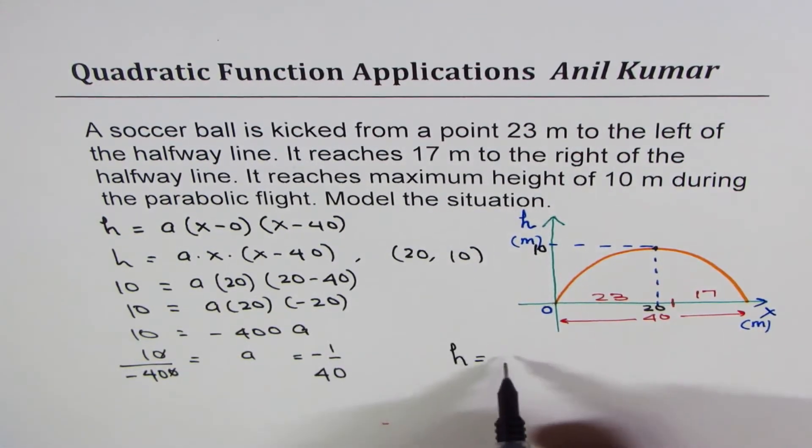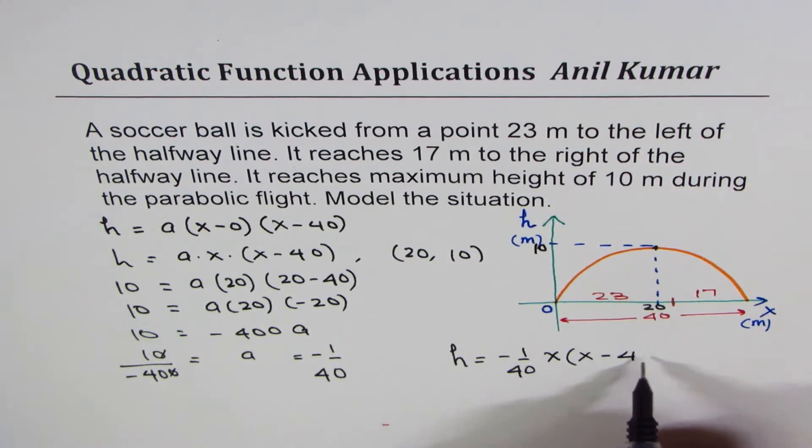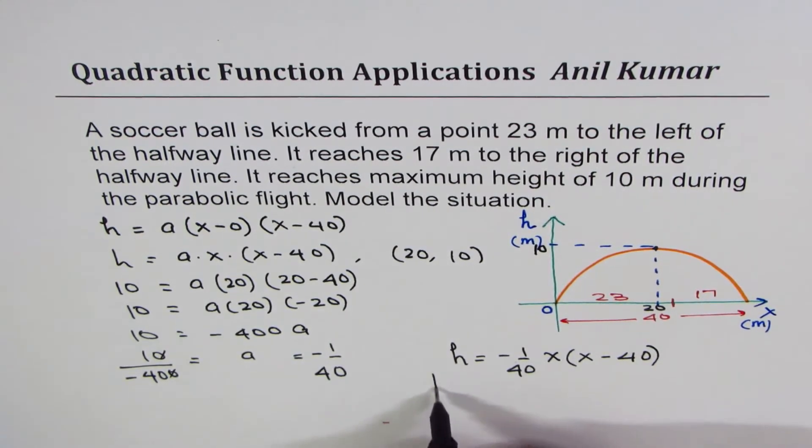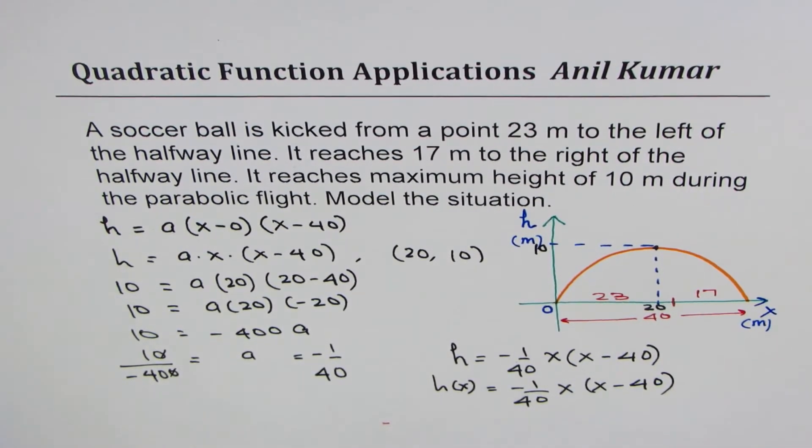So you can say height H is equal to minus 1 over 40, X times X minus 40. Now some of you who are doing functions, they should write H as a function of X equals to minus 1 over 40, X times X minus 40. So that is how this question should be done.